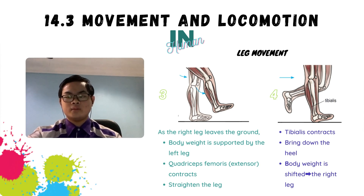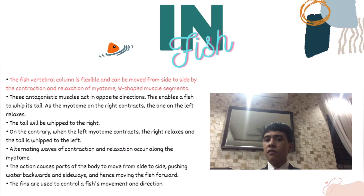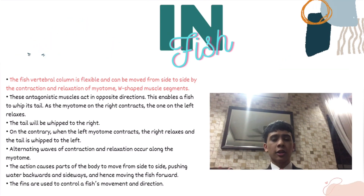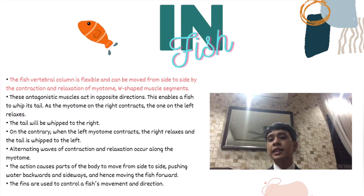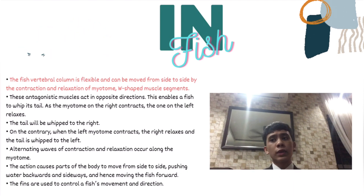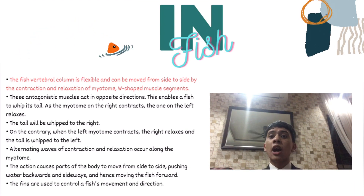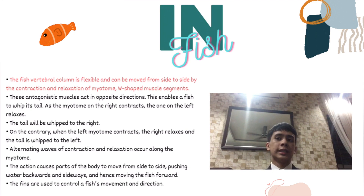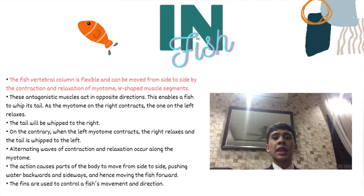Now we proceed with the movement of swimming in fish. The fish's vertebral column is flexible and can be moved from side to side by the contraction and relaxation of myotomes, which are W-shaped muscle segments. These antagonistic muscles act in opposite directions, enabling a fish to whip its tail.